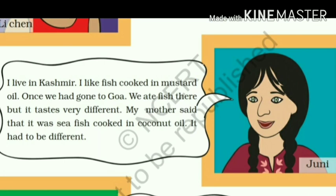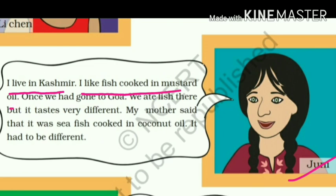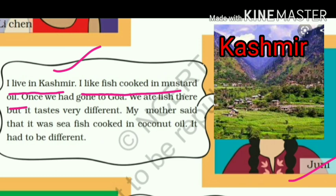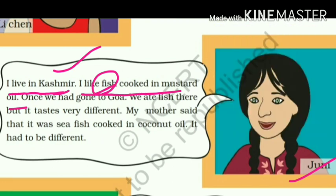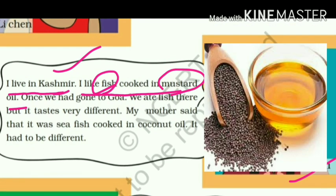This is Juni — she lives in Kashmir and she likes fish cooked in mustard oil. Juni Kashmir mein rehti hai, aur usse jo machhli banti hai, sarson ke tel mein bani hui machhli bahut pasand hai.